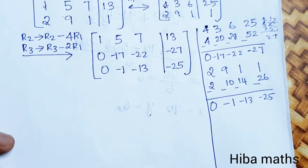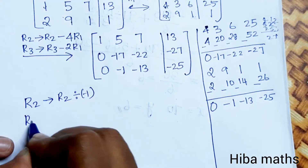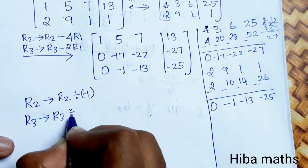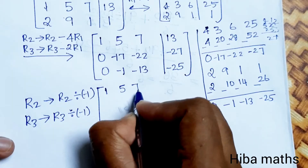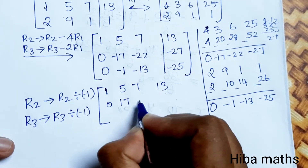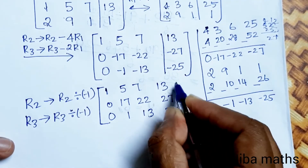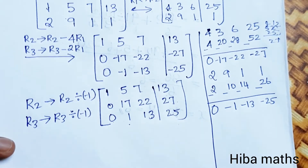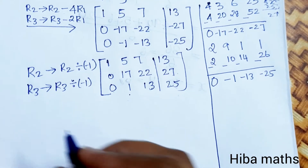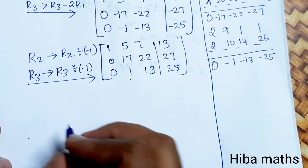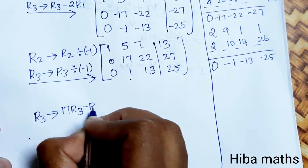Both R2 and R3 have leading zeros. R2 changes to R2 divided by minus 1, and R3 changes to R3 divided by minus 1. So minus 1 divided by minus 1 gives positive 1. The rows become positive, changing the signs. The second row is now 0, 17, 22, 27. R3 becomes 0, 1, 13, 25.